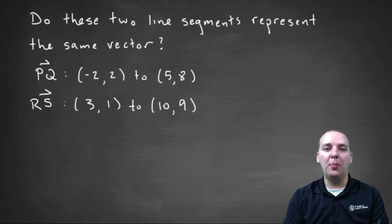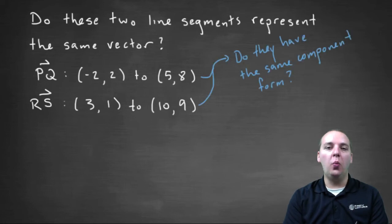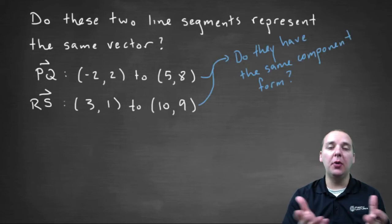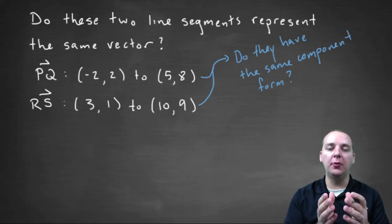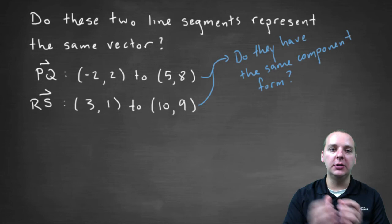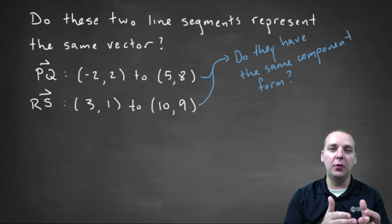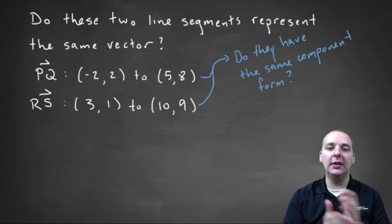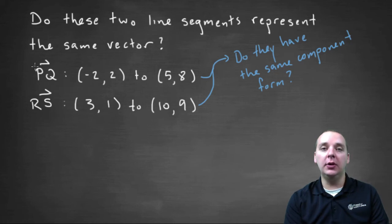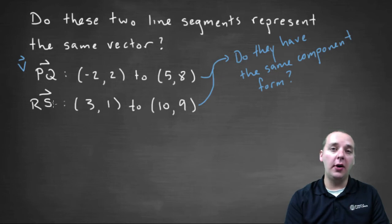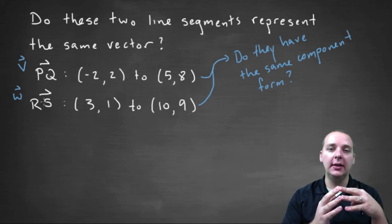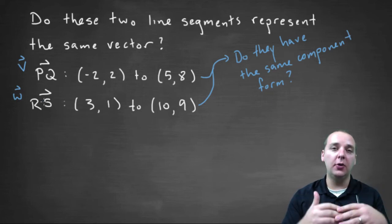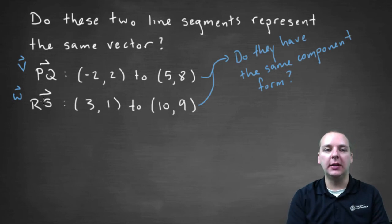A better approach is to ask: do these have the same component form? If you put PQ in component form, it will have its initial point drawn at the origin. If RS is represented by the same vector, then its component form should match. So we'll write PQ in component form — call it vector V — and RS in component form — call it vector W. If they match, they represent the same vector; if they don't, they don't.